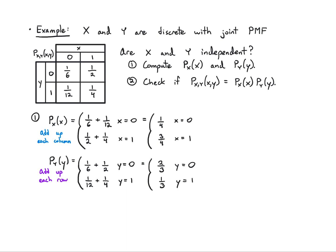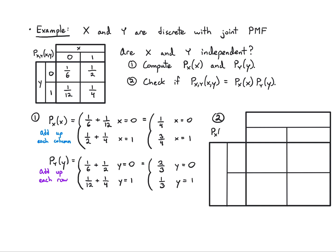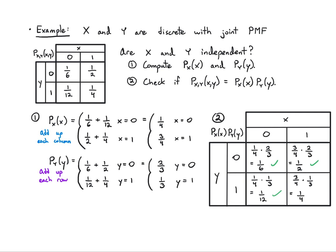Step two: compute the product of the marginals. Going entry by entry: (1/4)(2/3) = 1/6 ✓, (3/4)(2/3) = 1/2 ✓, (1/4)(1/3) = 1/12 ✓, (3/4)(1/3) = 1/4 ✓. Since the product of the marginals matches the joint PMF at every entry, X and Y are independent.